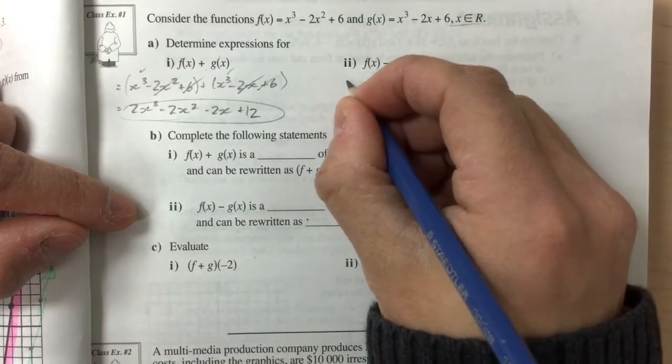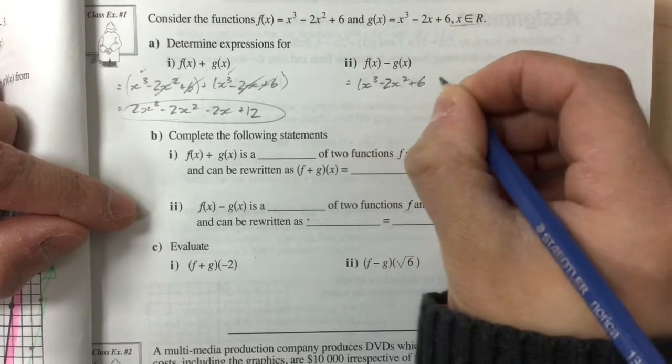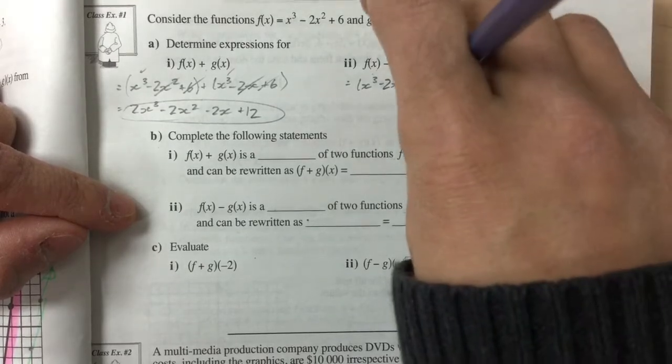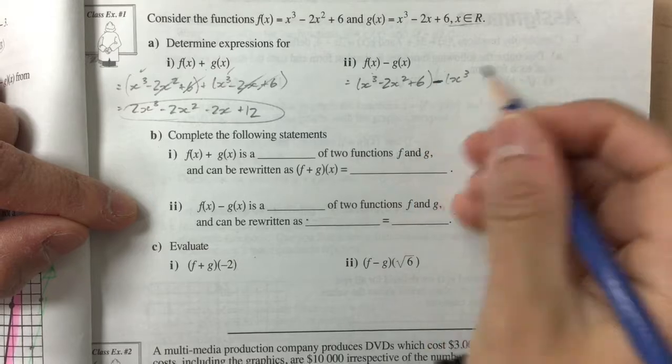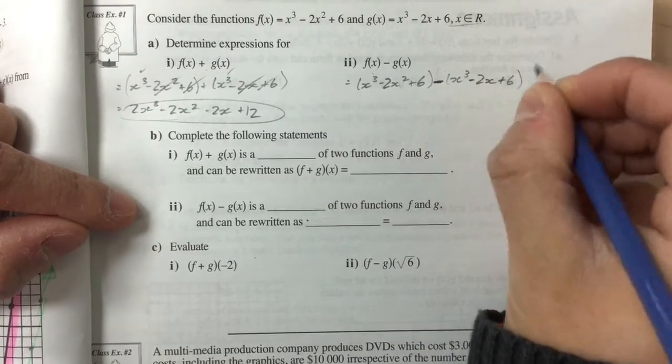f of g of x, we're doing the opposite. We're subtracting, so x cubed minus 2x squared plus 6, and we're subtracting x cubed minus 2x plus 6.